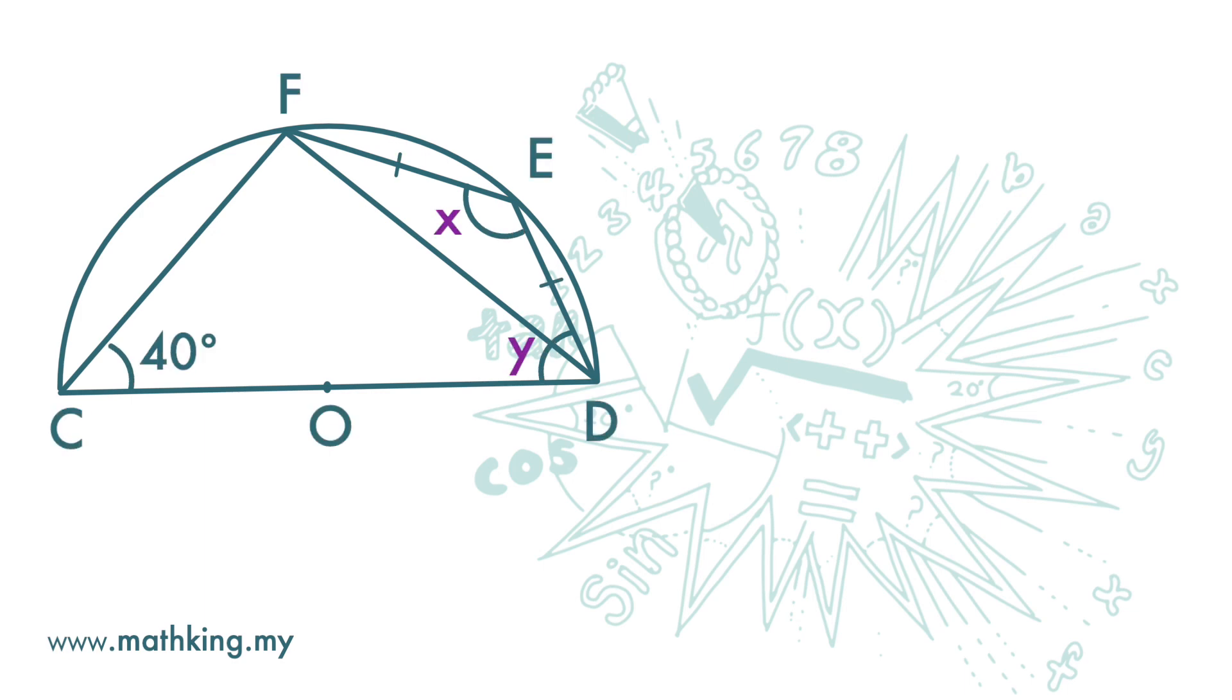Here we want to find X and Y. First, we need to see that CD is a diameter and that CDEF is actually a cyclic quadrilateral.